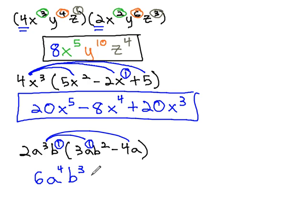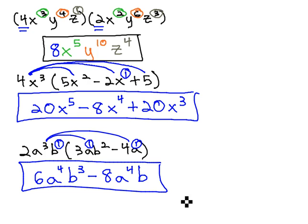Distributing onto the negative 4a, we get negative 8, a to the 3 plus 1, or 4, b to the 1st. And we get our final answer, 6a to the 4th, b cubed, minus 8a to the 4th, b.